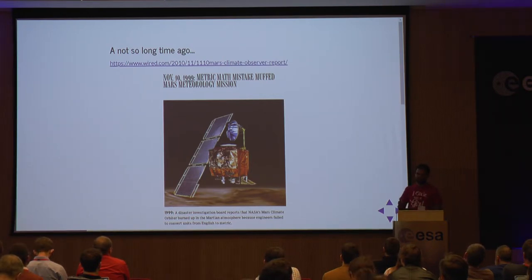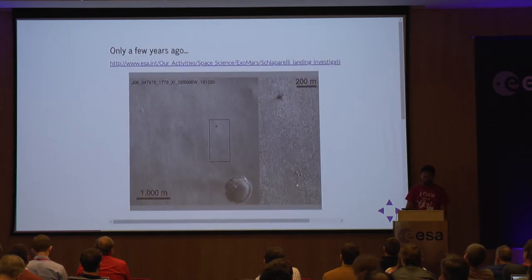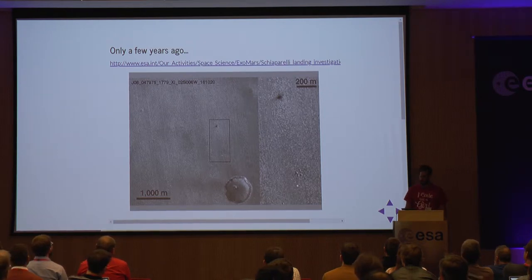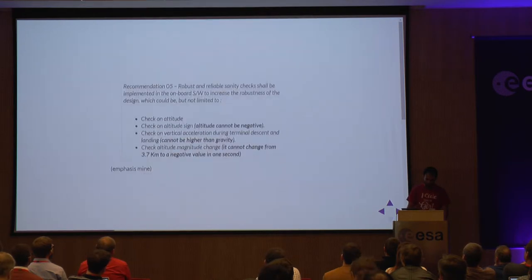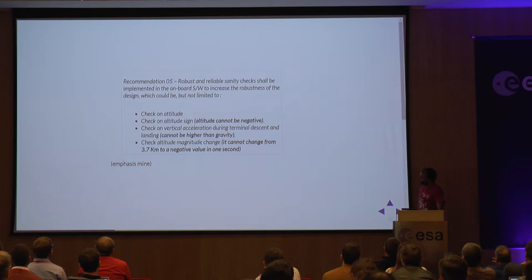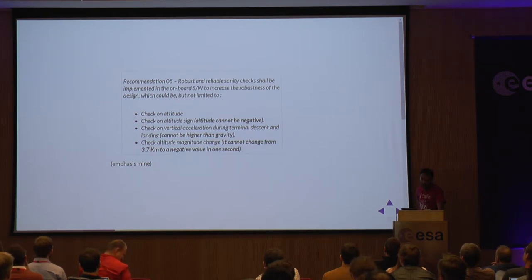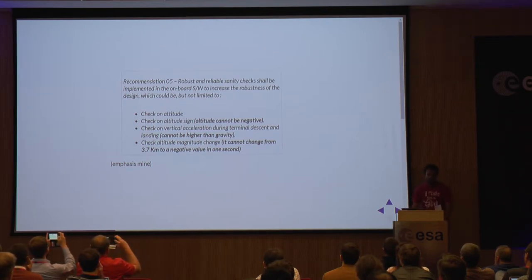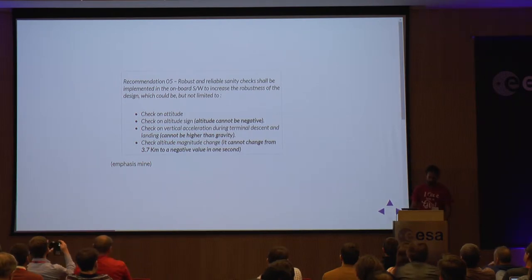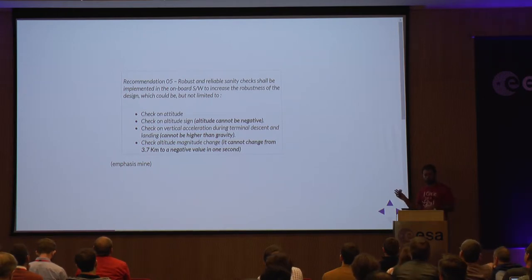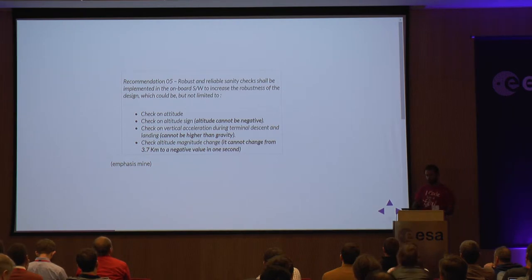Here in Europe we don't have this metric/imperial mismatch, so we don't make these mistakes, right? Well — this is Crater Schiaparelli, an artificial crater we created a couple of years ago. If you go to the report, my favorite recommendation includes: altitude sign cannot be negative; vertical acceleration during terminal descent cannot be higher than gravity; and altitude magnitude cannot change from 3.7 km to a negative value in one second, because that would violate the speed of light. It's more complex than just a software failure, but we can reduce these errors on the software side.